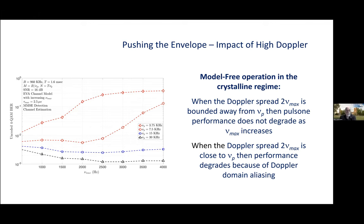That's what the two bottom curves are showing. However, when the Doppler spread is close to nu_p, performance degrades because of Doppler domain aliasing. That's the red curve that's heading upwards from the bottom.